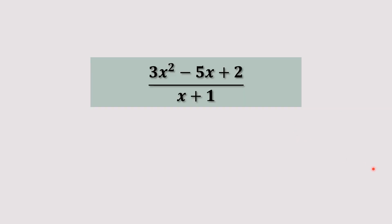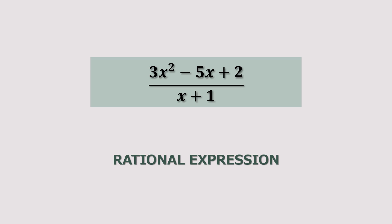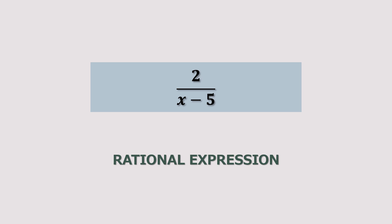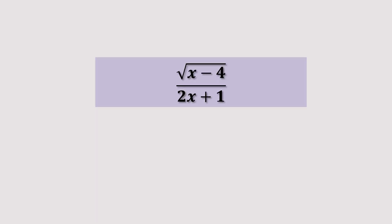3x squared minus 5x plus 2 divided by x plus 1 — rational or not? It's a rational expression. Next example: 2 divided by x minus 5 — it is again a rational expression. The square root of x minus 4 divided by 2x plus 1 is not a rational expression, since the numerator is not a polynomial expression.